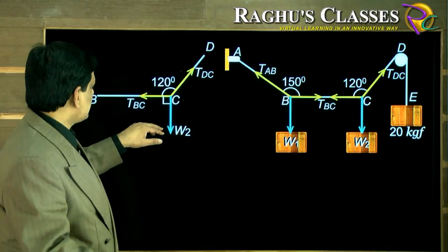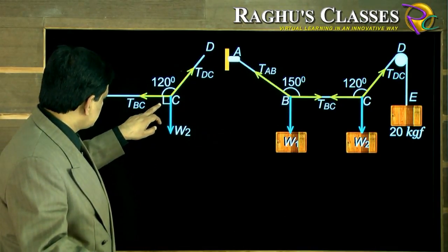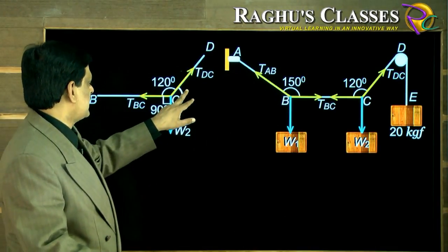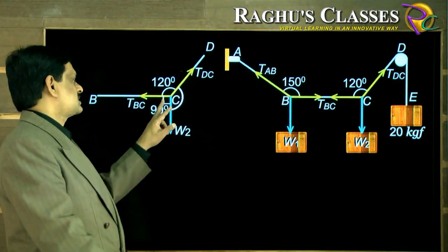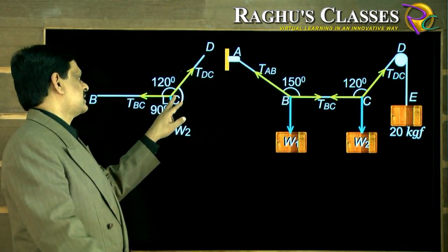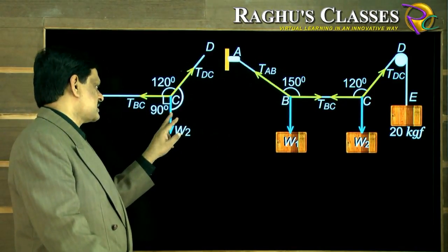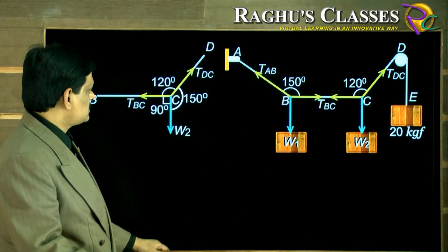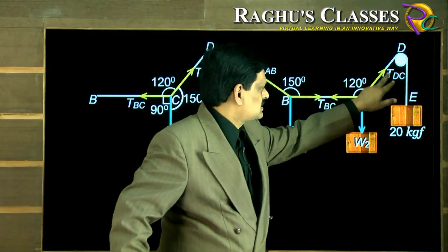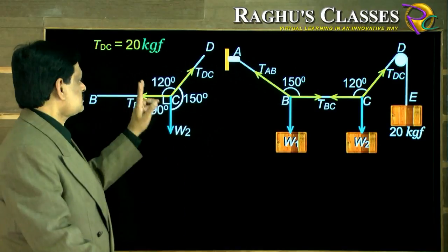Before going to that, let me take the angles here. This is 90 degrees, and this angle, since it is 120 degrees, the remaining angle here is 60 plus 90, which makes it 150 degrees. These are the angles.